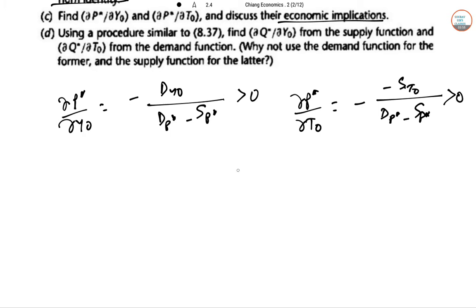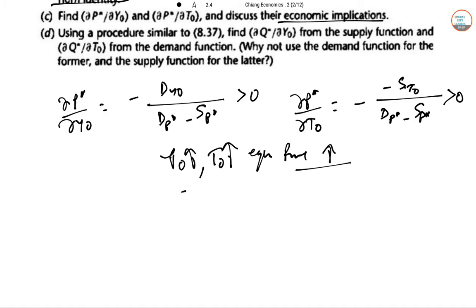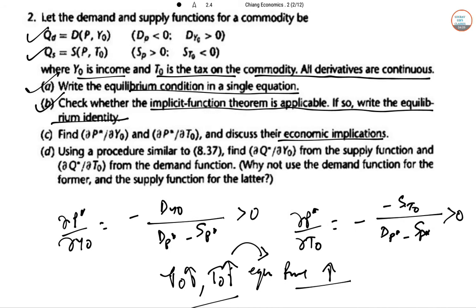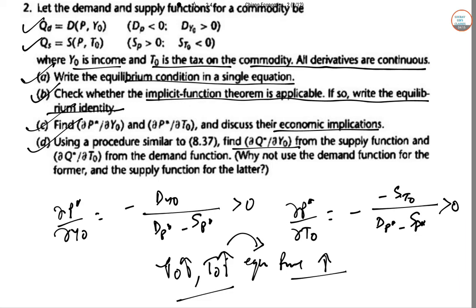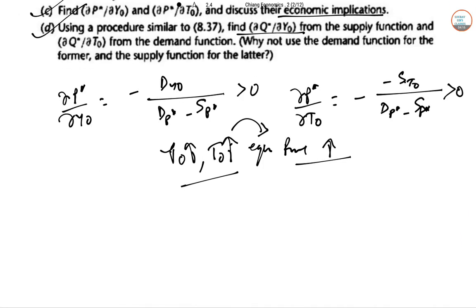An increase in income Y₀ or taxes T₀ will raise the equilibrium price in both cases. Now for part D, we find dQ*/dY₀.